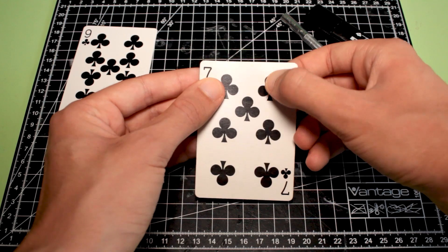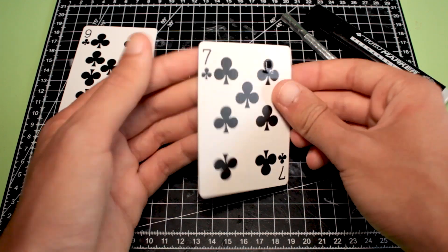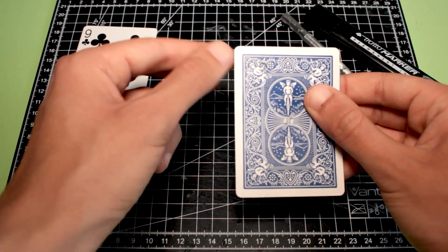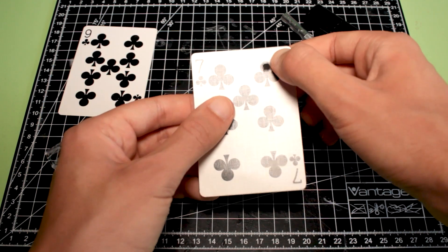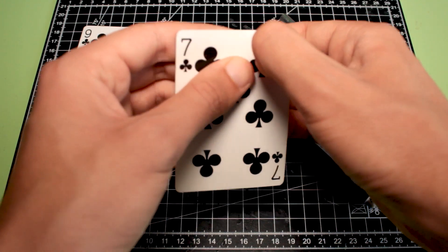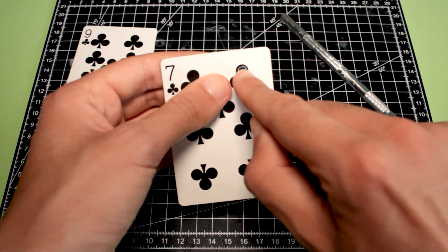You'll need to create a flap in this way. Now we need to use the black pen to color this flap, so we don't see this white part.